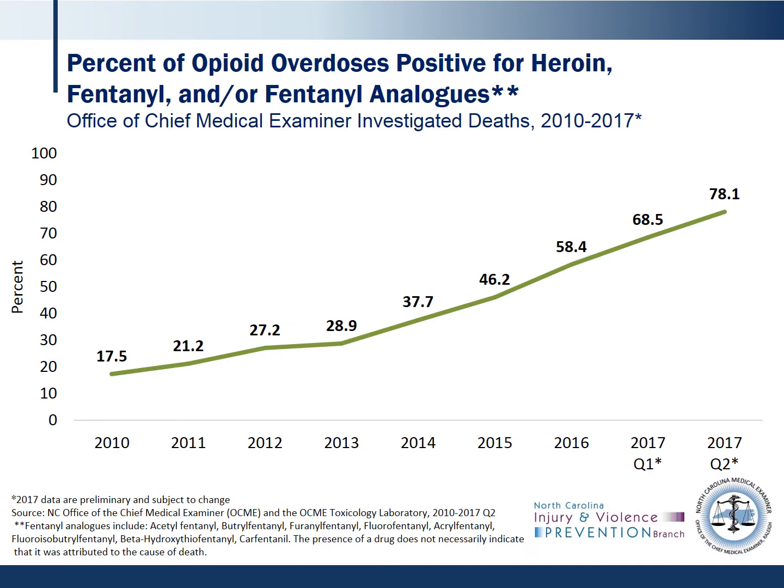The same point about the changing landscape of opioid overdose deaths is illustrated with data from the Office of the Chief Medical Examiner, or OCME. A larger proportion of deaths investigated by OCME are testing positive for heroin, fentanyl, and fentanyl analogs. In 2010, these substances only appeared in 17.5% of opioid overdoses. Preliminary data shows that in Q2 of 2017, almost 80% of opioid overdoses investigated by OCME tested positive for fentanyl, heroin, and/or a fentanyl analog.